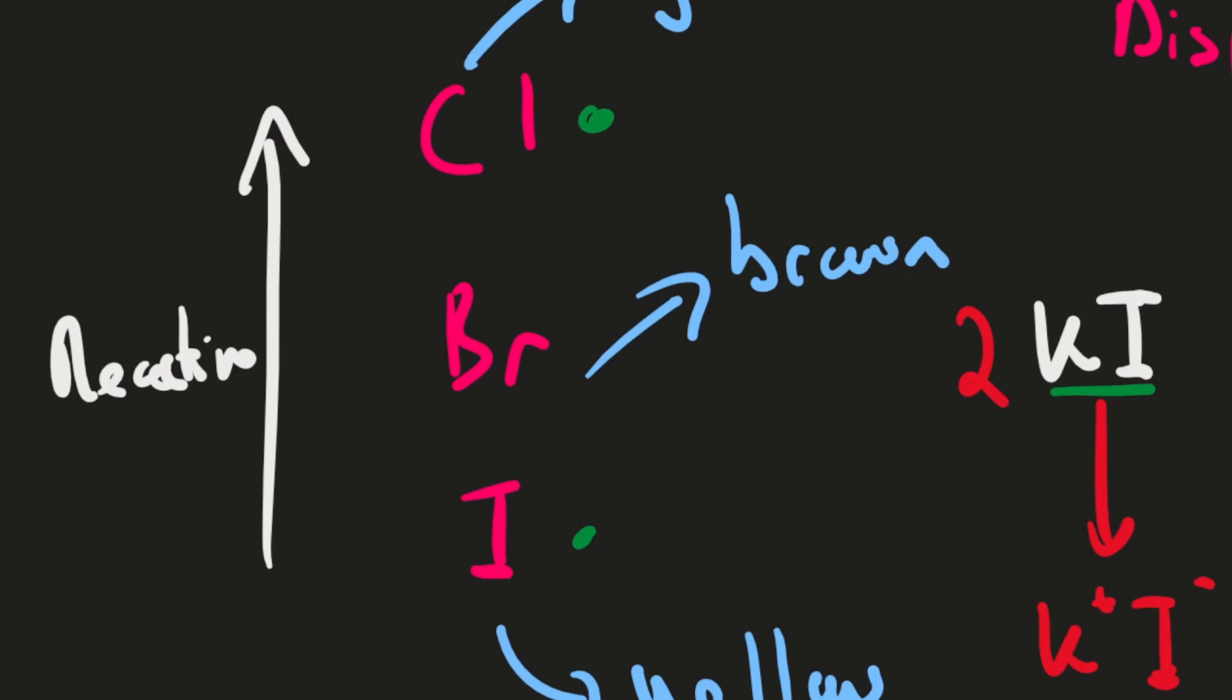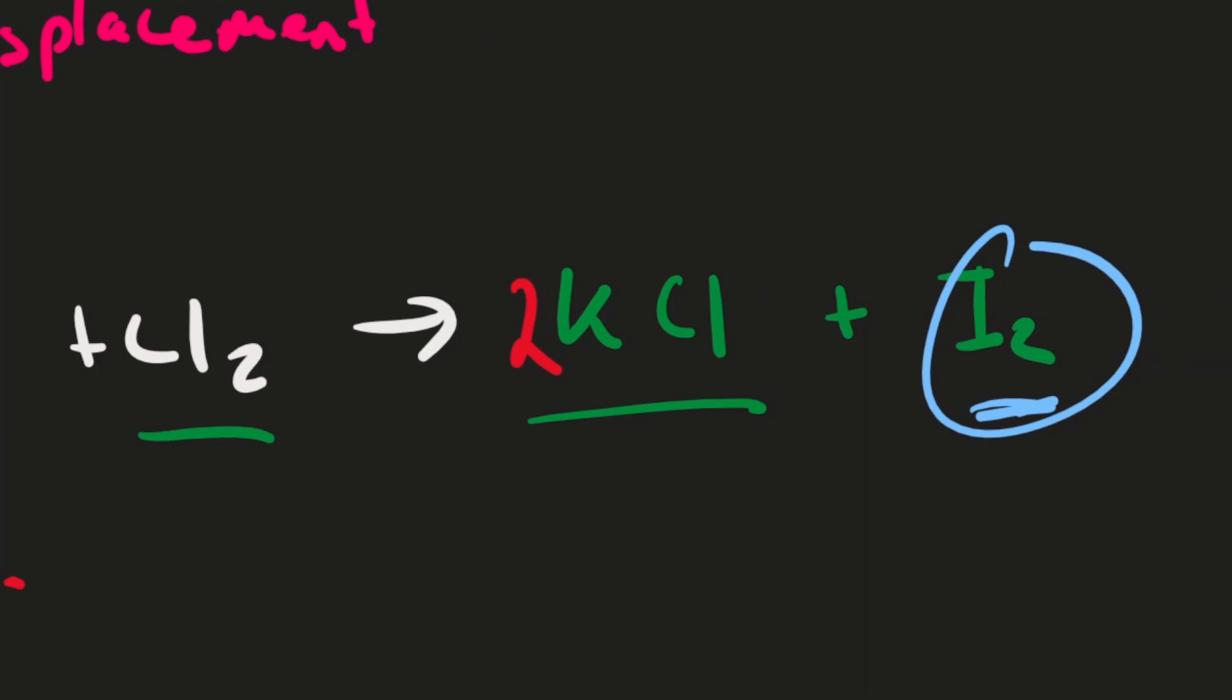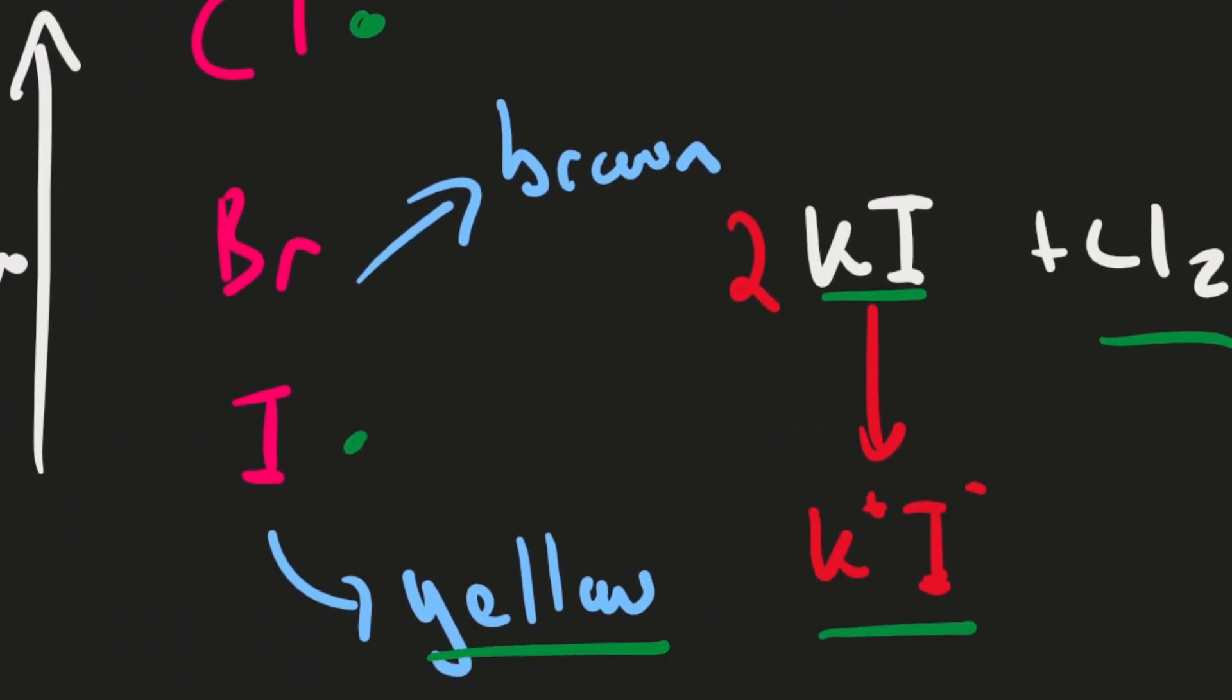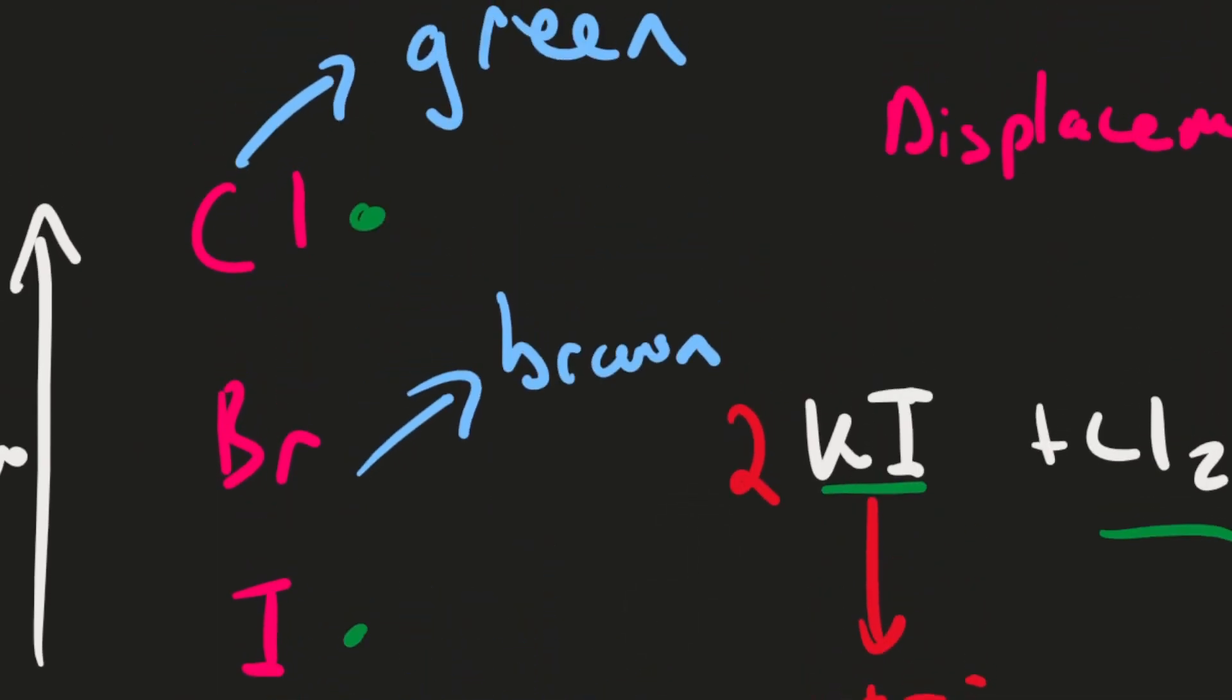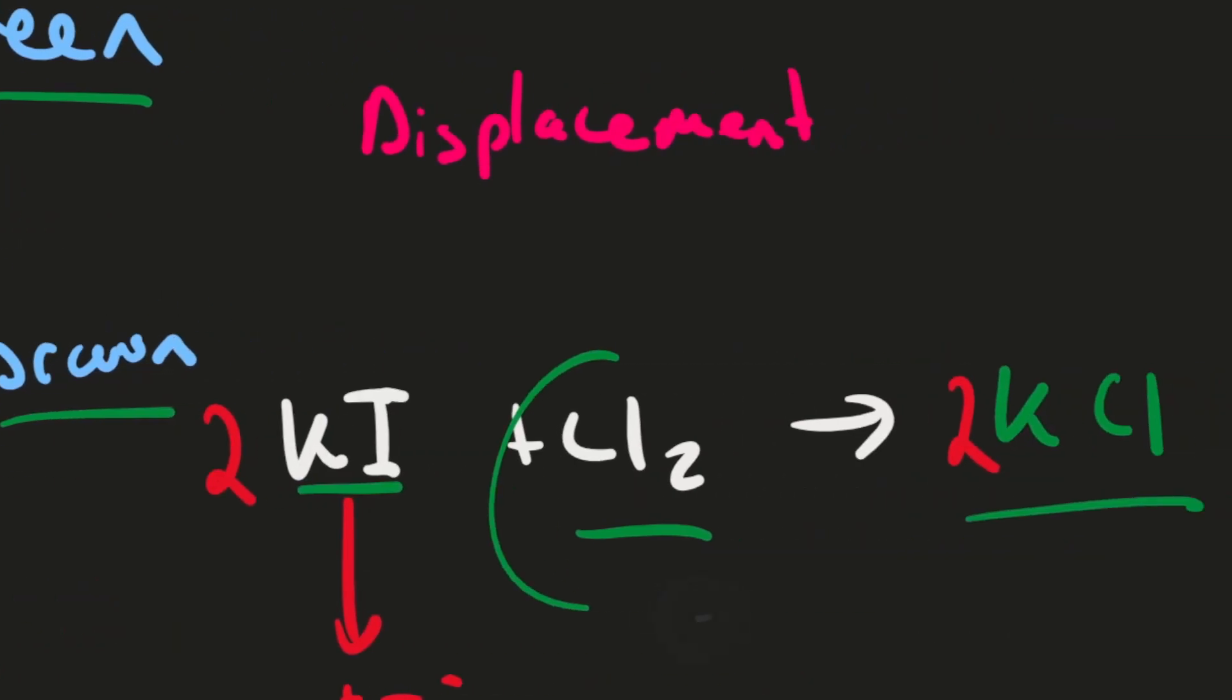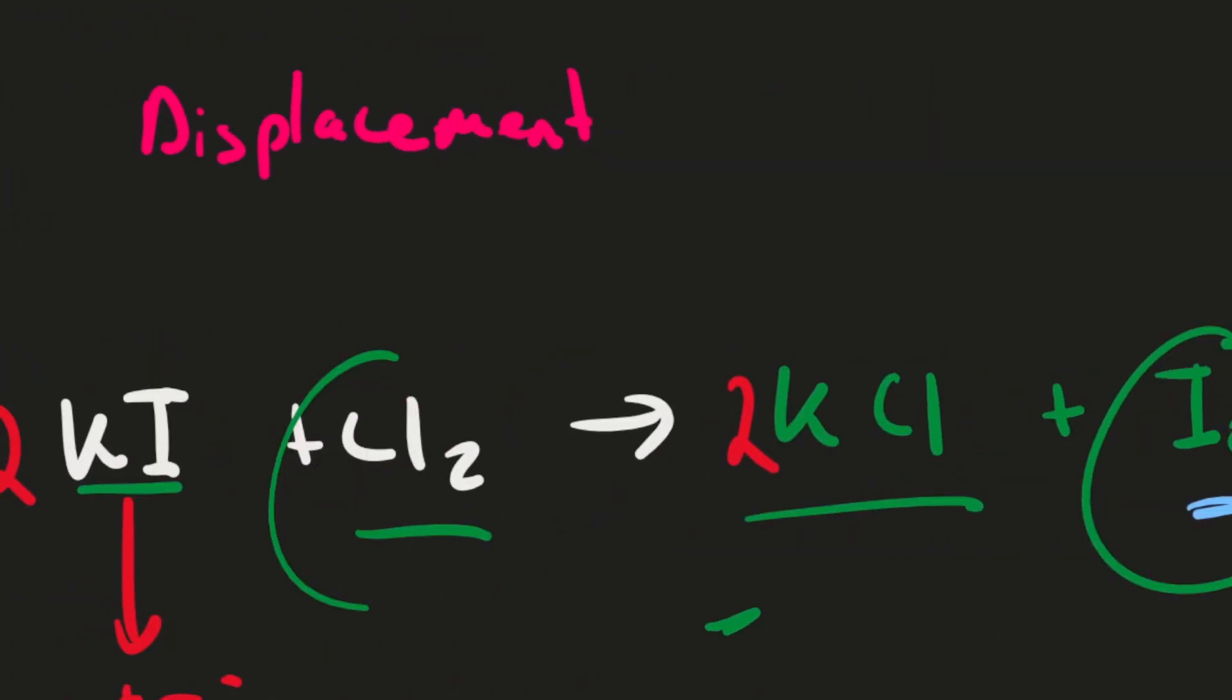But the color of the solution will change depending on what element is free. So here, because we've got iodine free, the solution will actually turn yellow because iodine is yellow. If bromine is free in the solution, it will turn brown. If chlorine was free, it will turn green. So at this stage the solution would be green, and then it would turn yellow as the iodine is displaced and replaces the chlorine. The chlorine and the iodine switch places.